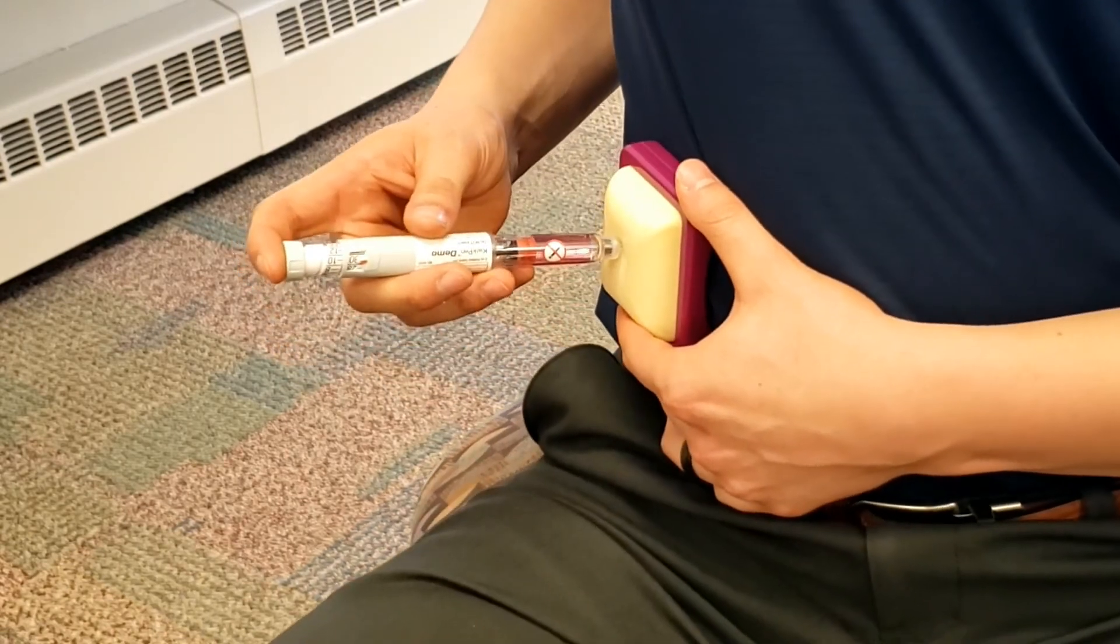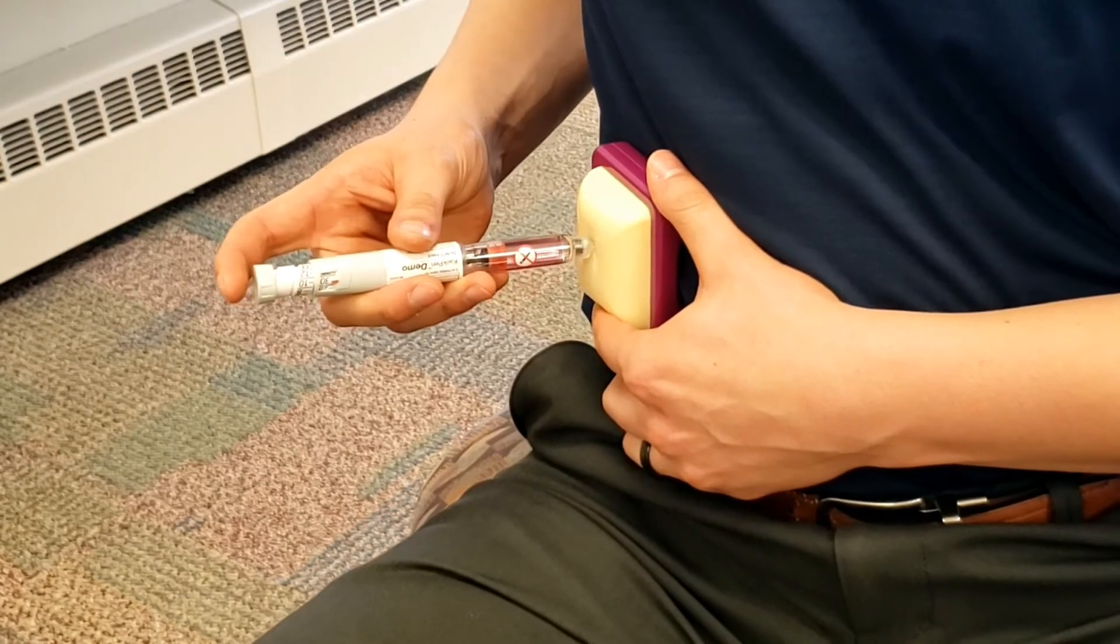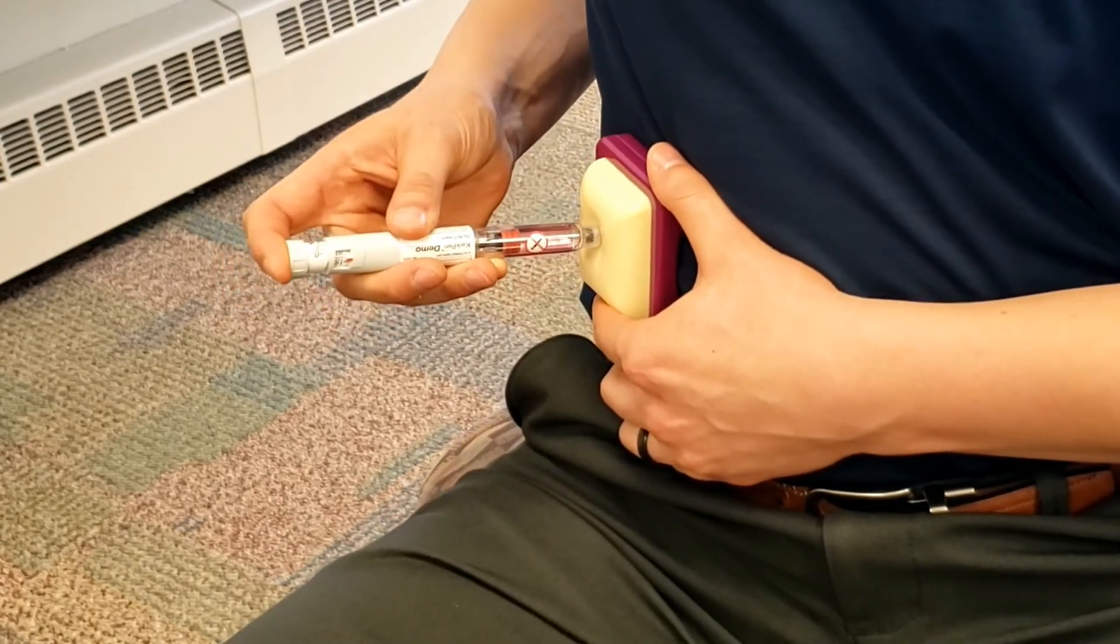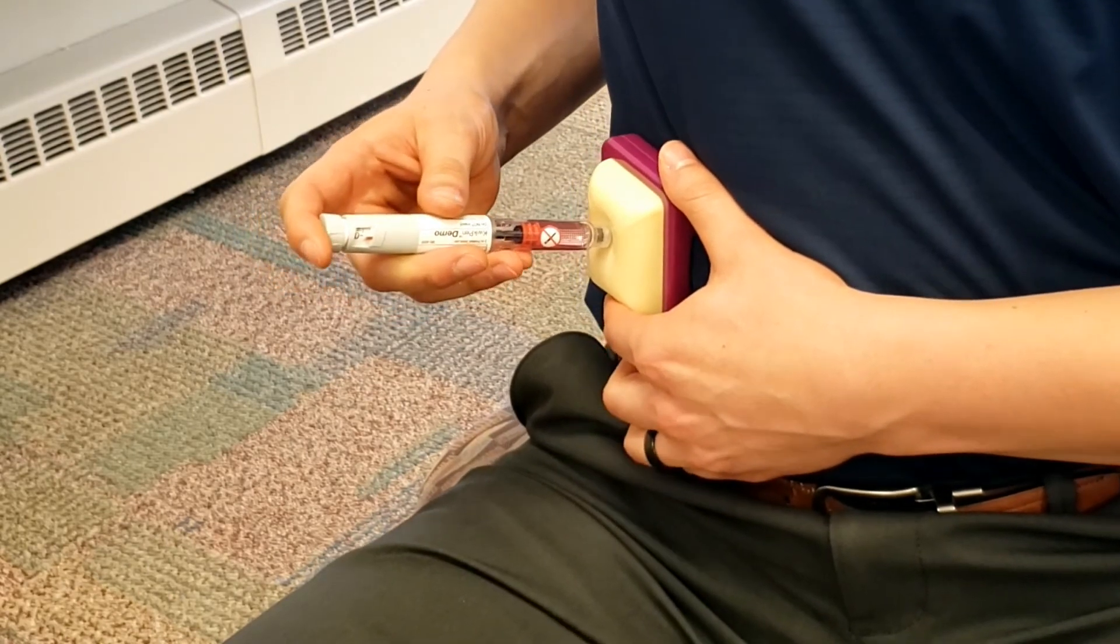Once you have pushed the needle into your skin, push the button on the bottom of the insulin pen all the way in to inject the insulin. Count to 10 before removing the needle from your skin.